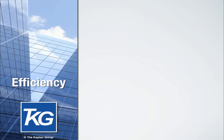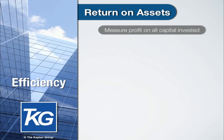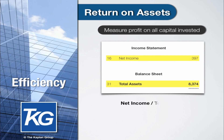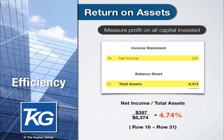The next efficiency ratio is return on total assets instead of just shareholders' equity. This is a measure of profit on all capital invested in the business which was used to acquire assets. We simply take net income and divide it by total assets. In this example, the net income of $397,000 is divided by total assets of $8,374,000, and we get a return on assets of 4.74%. The return on equity ratio is impacted by the debt to equity ratio of the specific company, whereas the return on assets ratio eliminates the impact of the source of financing.